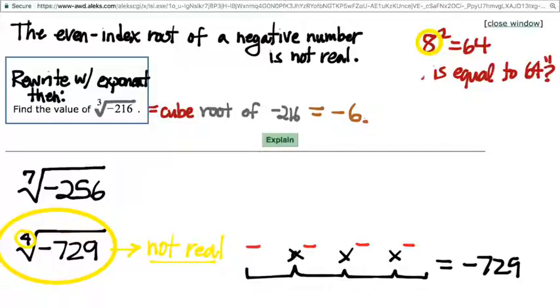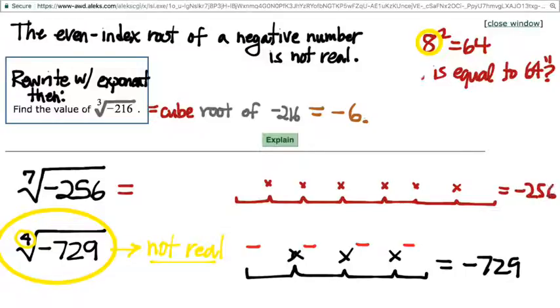But when the index is odd, it is possible. Any guesses to what the seventh root of negative 256 is? This is one that is going to take longer to check than most. So something which, when multiplied by itself seven times, it's going to give me negative 256.